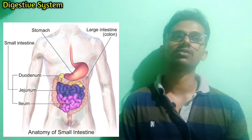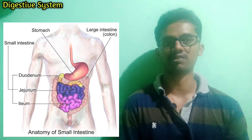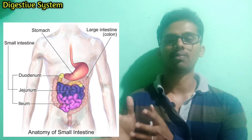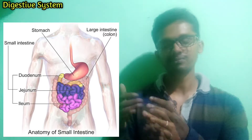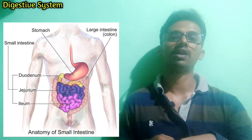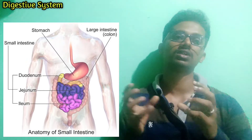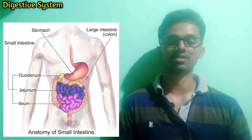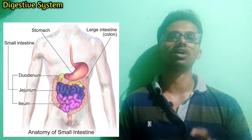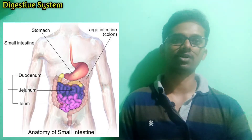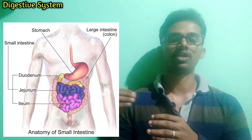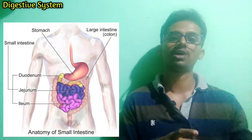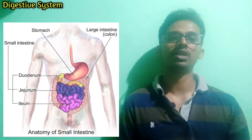Comparatively, the Ileum is the largest area, covering almost 60% of the small intestine. In the stomach, the pylorus has a pyloric sphincter muscle. When the pyloric sphincter opens, food enters the small intestine. Food then moves through the Duodenum, then the Jejunum, then the Ileum. At the junction between the Ileum and the large intestine, there is the Ileocecal valve.